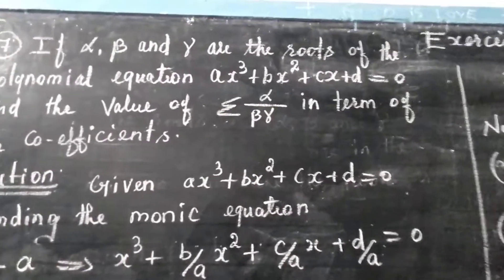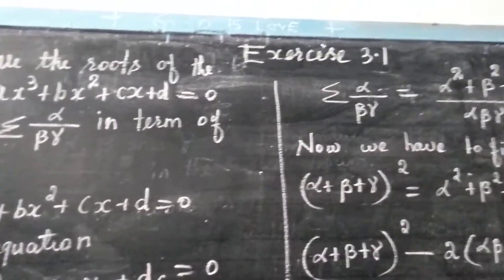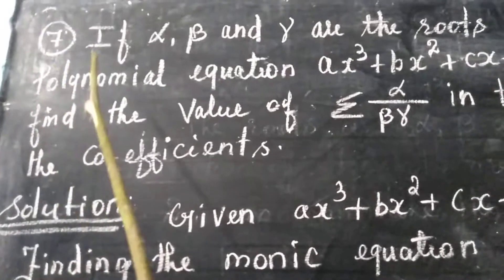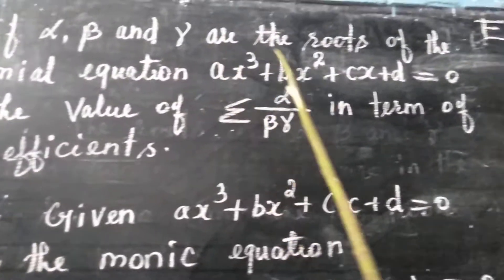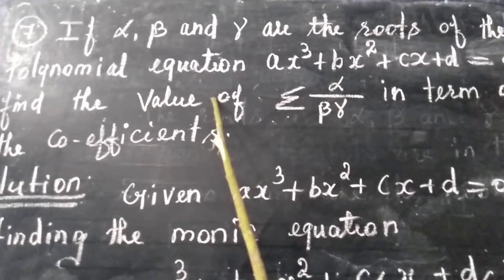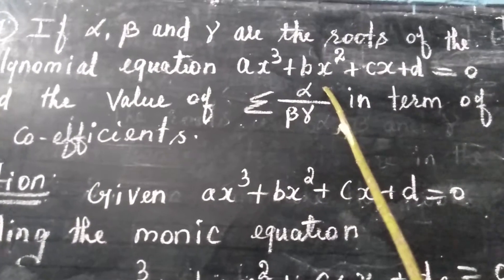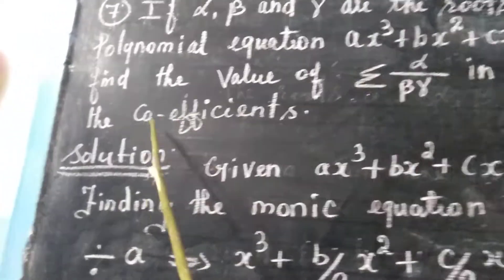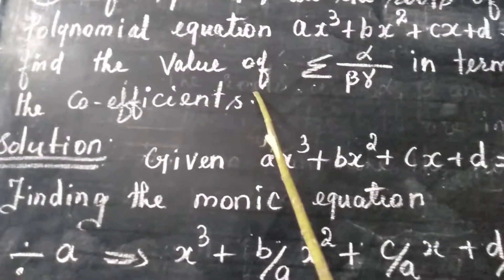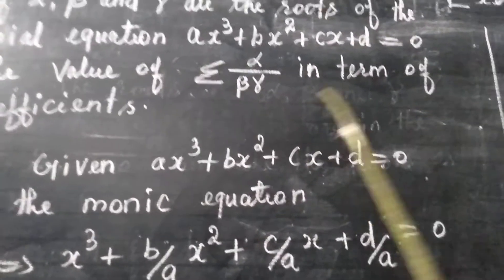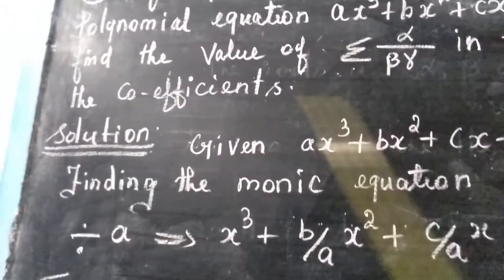Hi students, this is Drashila. Now we are going to learn Exercise 3.1, question number 7. If alpha, beta and gamma are the roots of the polynomial equation A x cube plus B x square plus C x plus D is equal to 0, find the value of sigma alpha by beta gamma in terms of the coefficients.